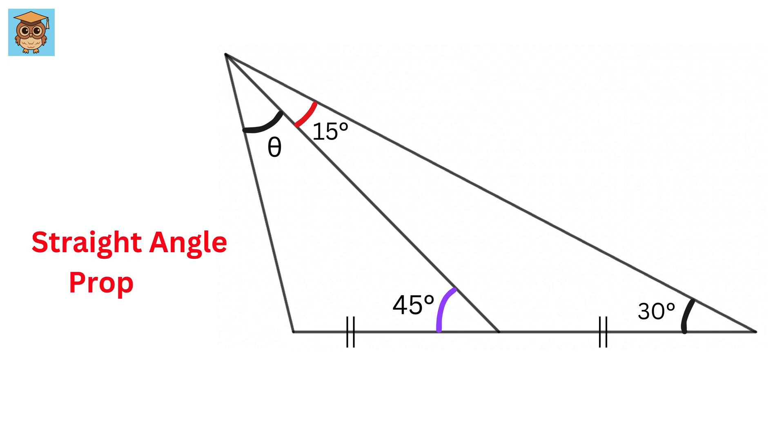Next, using the straight angle property, we know that this whole angle is 180 degrees. So, if this angle is 45, then this will be 180 minus 45 or 135 degrees.